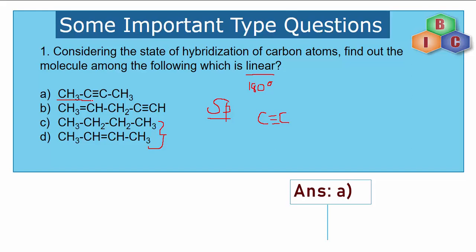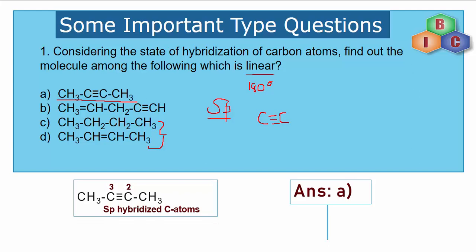Option A is the molecule CH3–C≡C–C≡C–CH3. Numbering the carbon atoms 1, 2, 3, and 4, the second and third carbon atoms are involved in sp hybridization and happen to be at the center of the molecule. This is why the molecule has a linear shape — the triple bond is at the center, not towards one end as in option B. Therefore, option A is the correct answer.